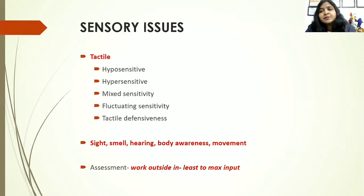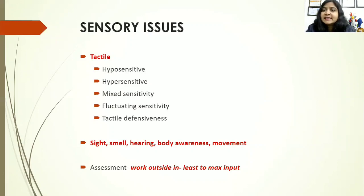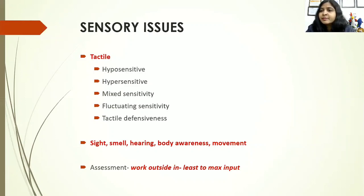Another important area is sensory issues. Many sensory systems are working in the mouth — the major one is tactile. We see five sorts of sensitivities: hyposensitive, hypersensitive, mixed sensitivity, fluctuating sensitivity, and tactile defensiveness.